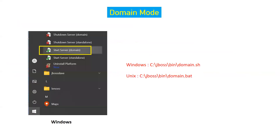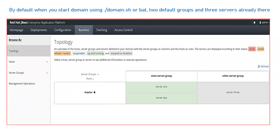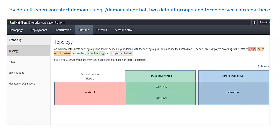To start in domain mode, use the domain.sh or domain.bat file, or the Windows startup shortcut. By default, JBoss domain mode creates default server groups and servers. There are two default groups: 'main-server-group' and 'other-server-group'. Inside main-server-group, two server instances are created — server-one and server-two. Inside other-server-group, one server instance is created — server-three.